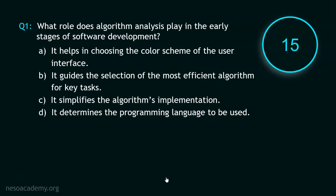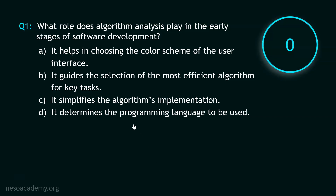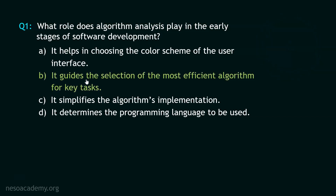Here is the question and your time starts now. Stop. So what role does algorithm analysis play in the early stages of software development? The correct option is option B — it guides the selection of the most efficient algorithm for key tasks. Now let's move to question number 2.